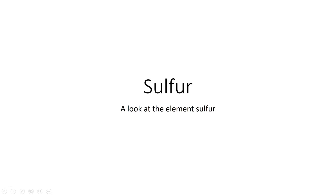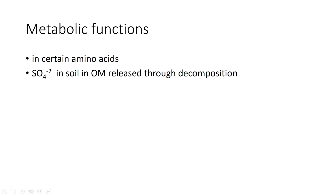Let's look at the element sulfur. It is a yellow material. When we look at the metabolic functions, sulfur is found in certain amino acids. All of these amino acids that sulfur is found in are considered to be essential in humans — you must have them in your diet.